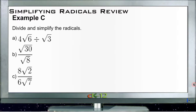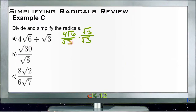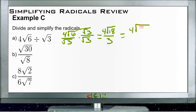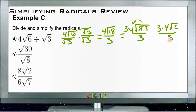And then finally, Example C: divide and simplify the radicals. We have 4 roots of 6 divided by the square root of 3. We're going to take 4 roots of 6 over square root of 3 and get the 3 out of the denominator by multiplying top and bottom by the same number. We have square root of 3 squared, so that leaves just 3 in the denominator. And 4 roots of 6 times root of 3 gives us 4 roots of 18. Now we simplify root of 18 as 9 times 2, so we have 4 roots of 9 times 2 over 3. The square root of 9 is 3, so we put a 3 outside. That gives us 3 times 4 roots of 2 over 3 — the 3s cancel — leaving us with just 4 roots of 2.